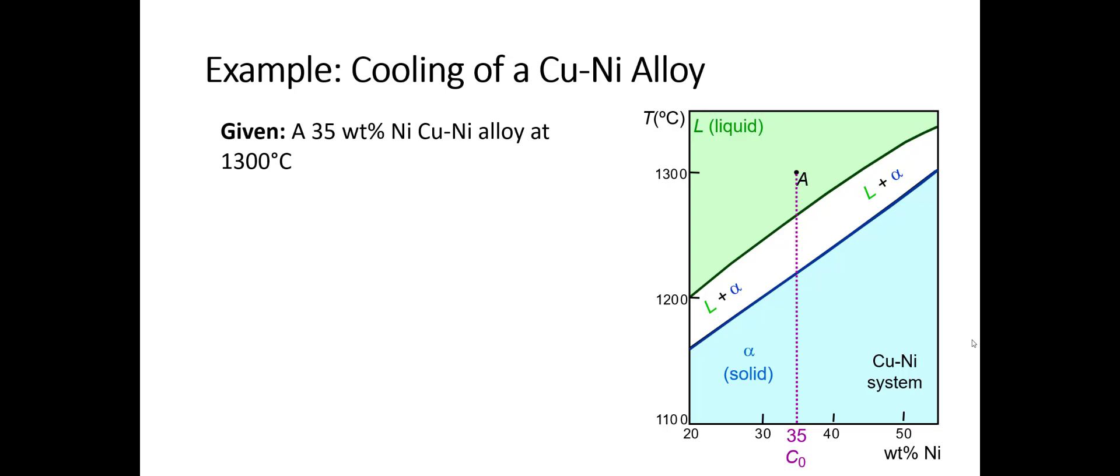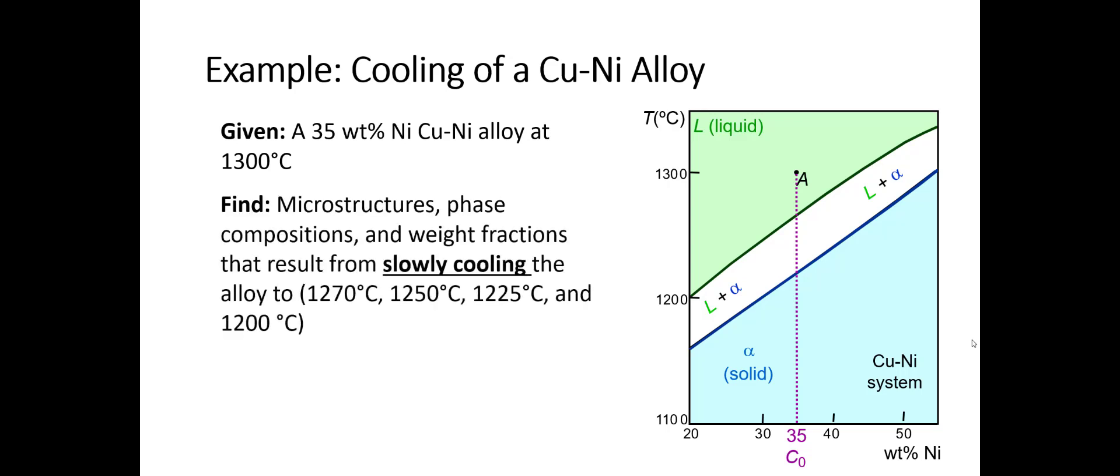It's going to be a liquid. We want to find the microstructures, the phase compositions, and the weight fractions that result from slowly cooling the alloy to 1270°C, 1250°C, 1225°C, and 1200°C. We're really trying to start at this point and cool down to these various temperatures, and ask the question, what does the microstructure look like as we go down there?